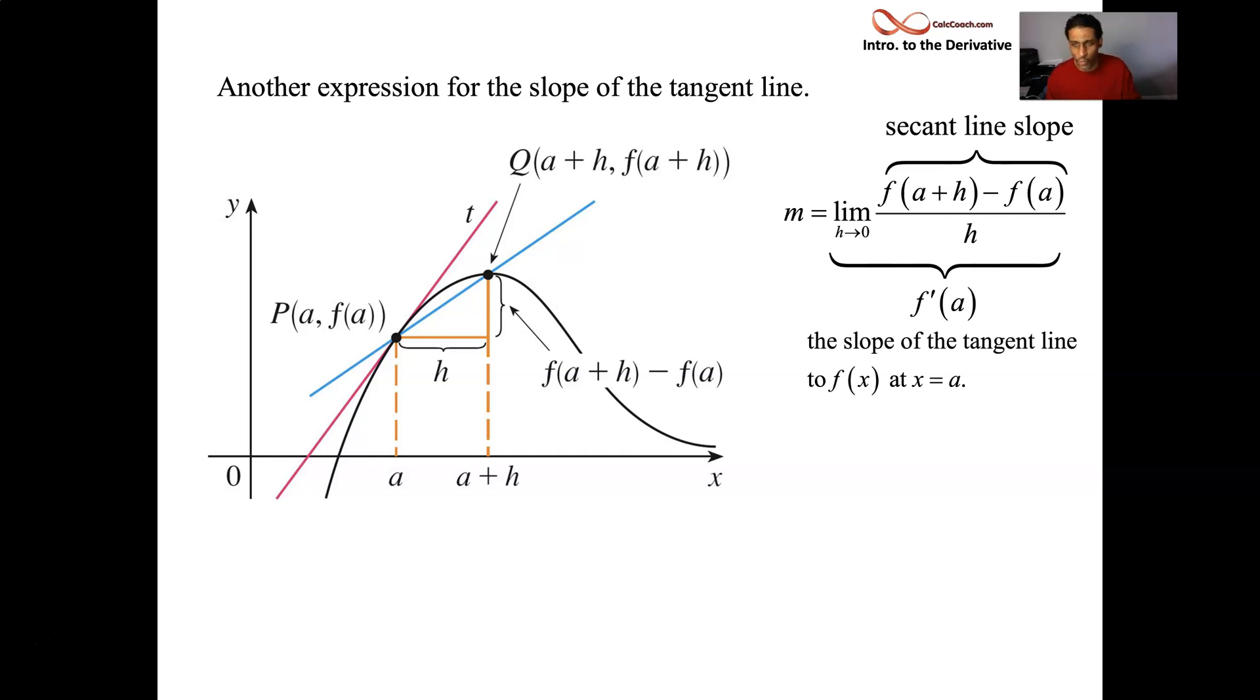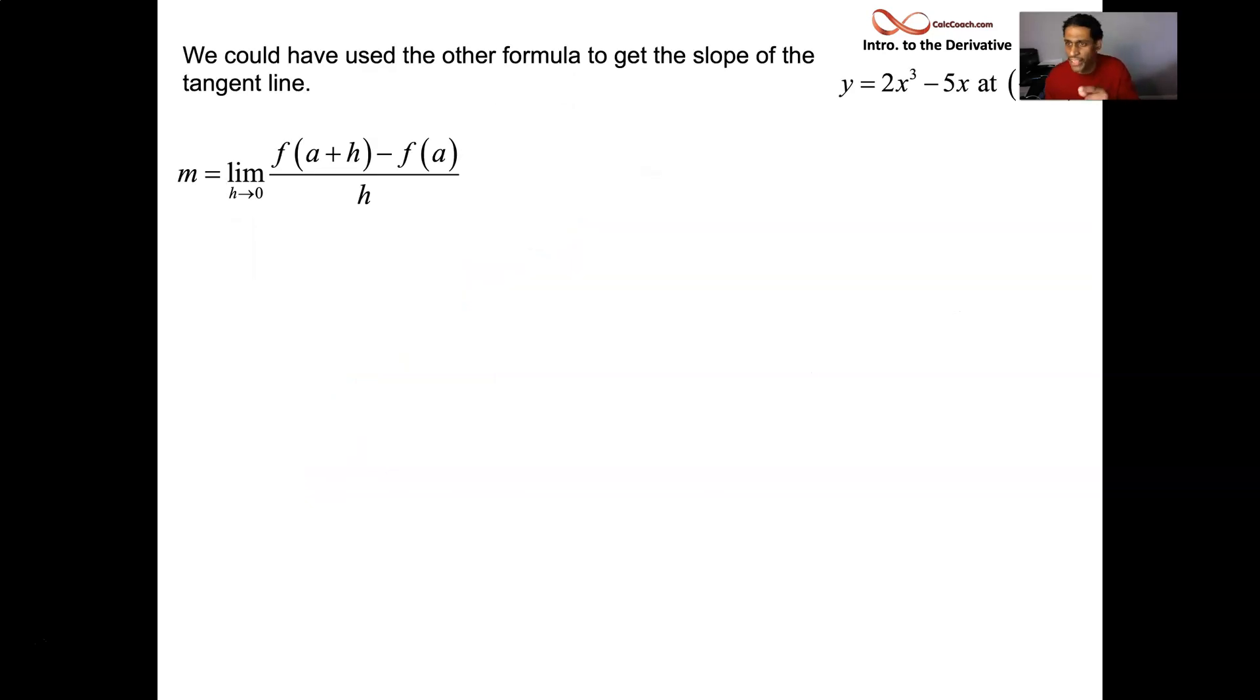Let's go back to that same example and work it for a being equal to negative 1 and the function, which was 2x³ - 5x. So we have the value of a is negative 1. So f(-1 + h) minus f(-1). It's all divided by h. And we're taking the limit as h goes to 0. Replace the x with a negative 1 plus h. So 2 times the (-1 + h)³ minus 5 times the (-1 + h). That's the first part of the numerator. We already know what f(-1) is. f(-1) is a 3. So we already know the second part of the numerator.